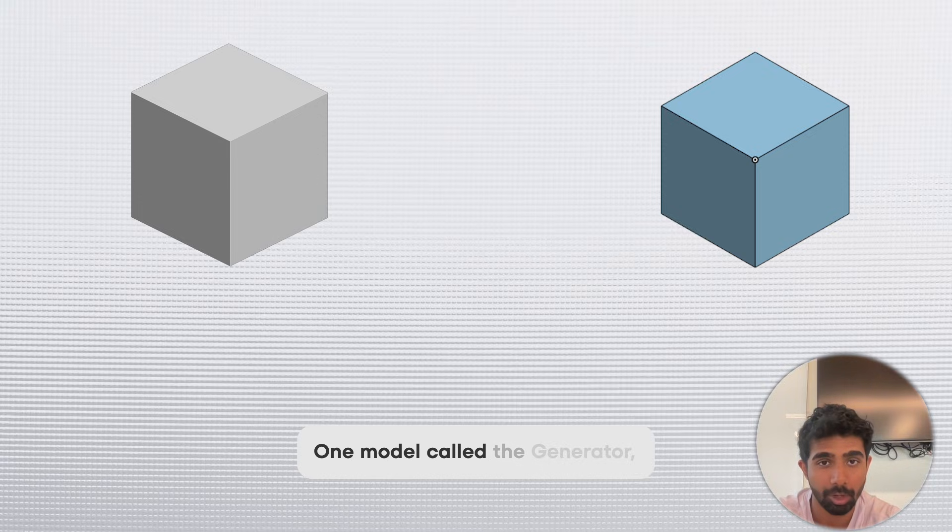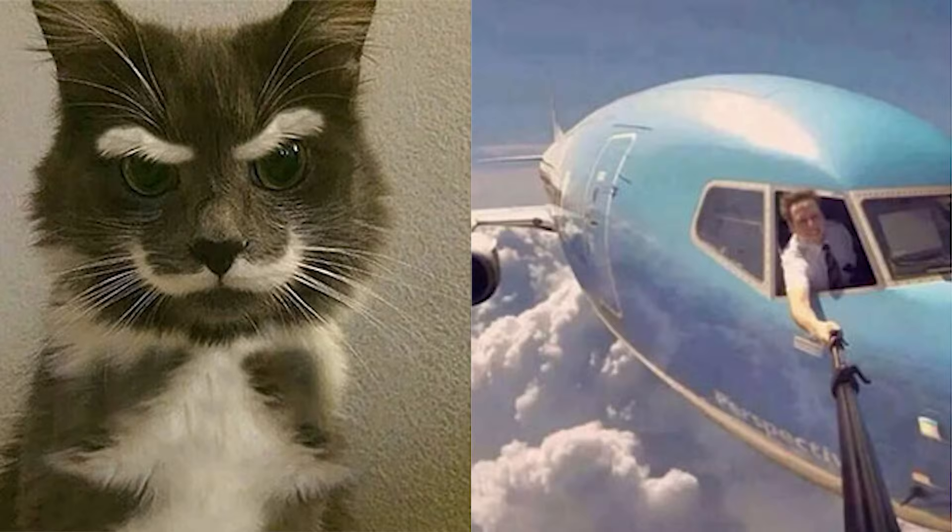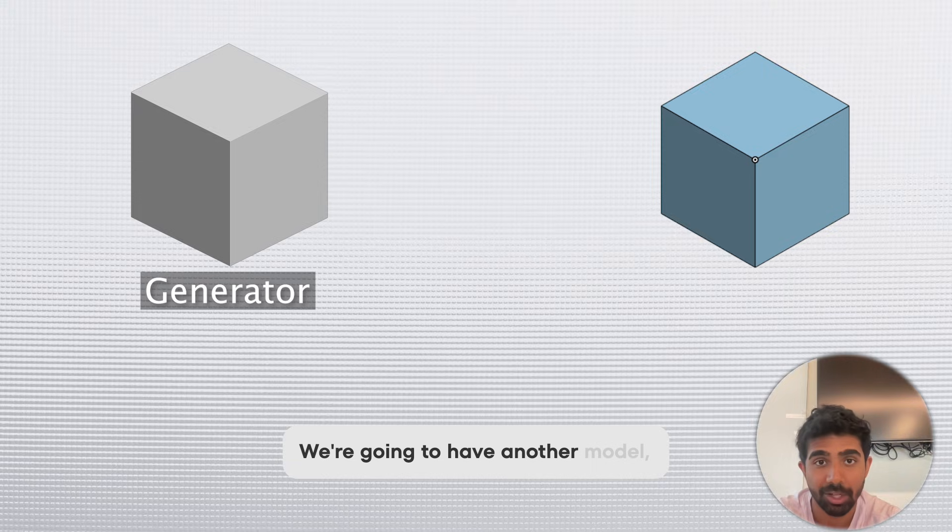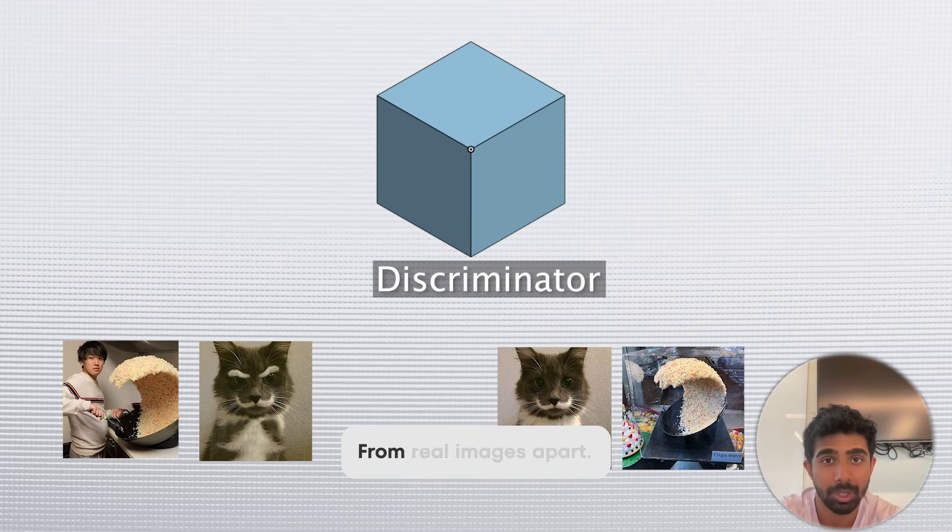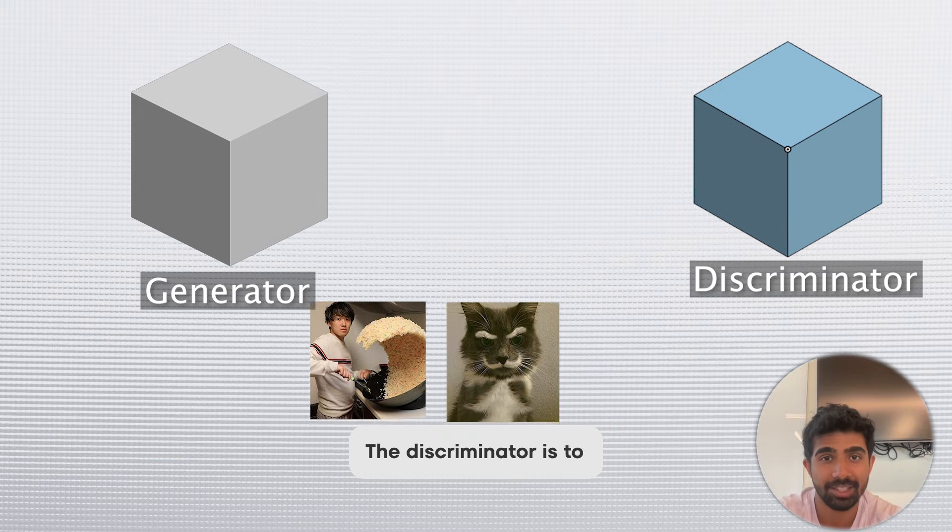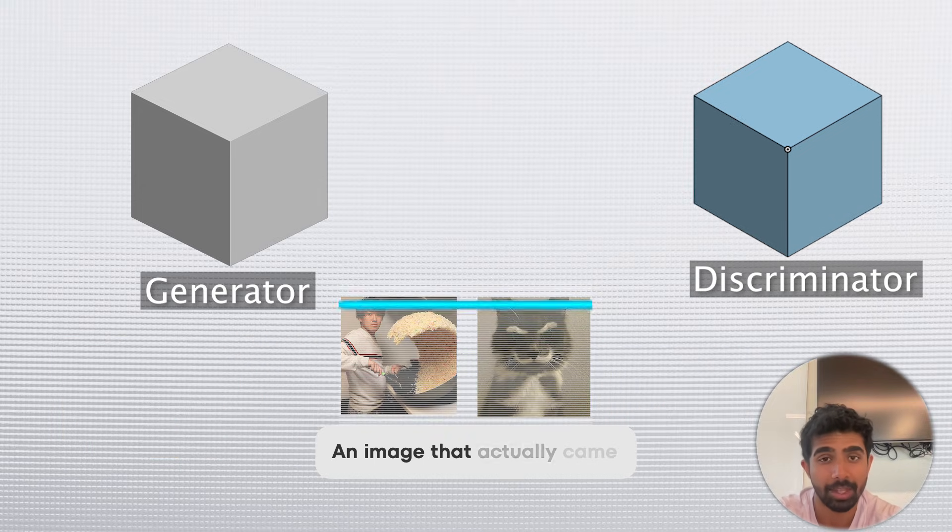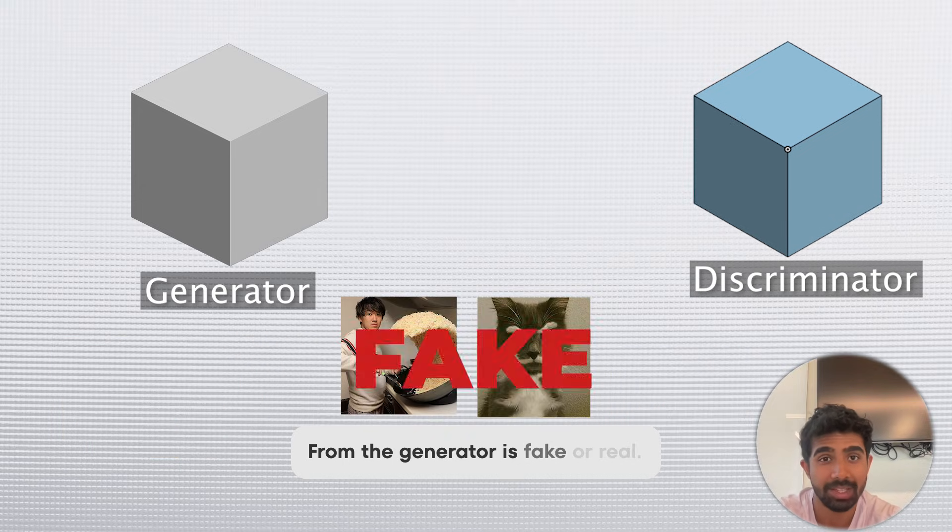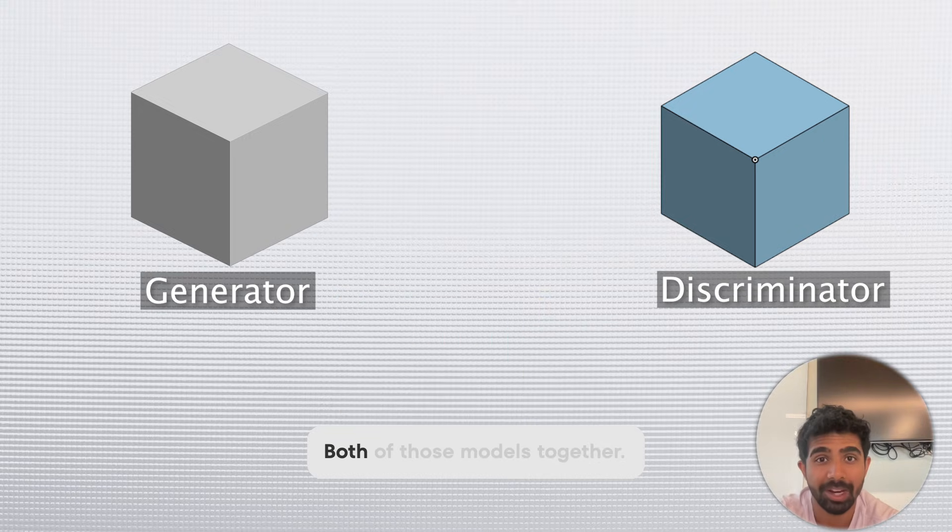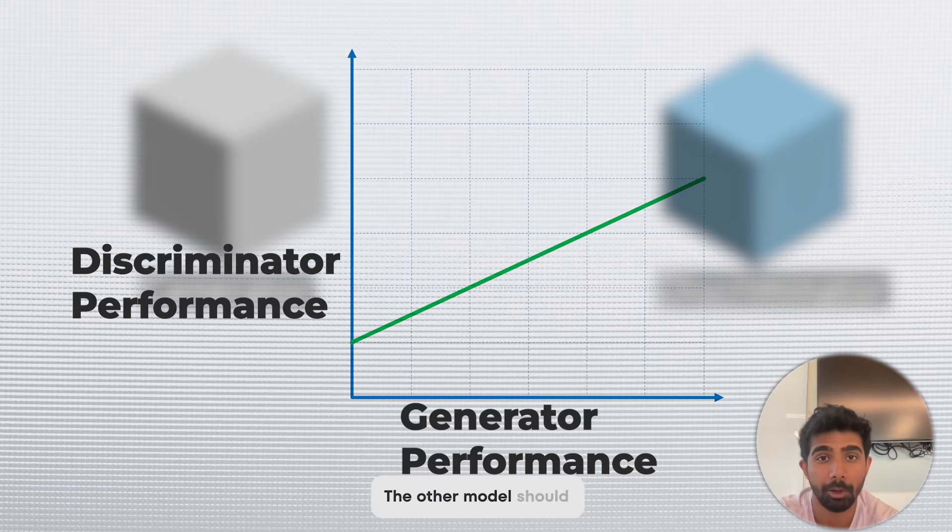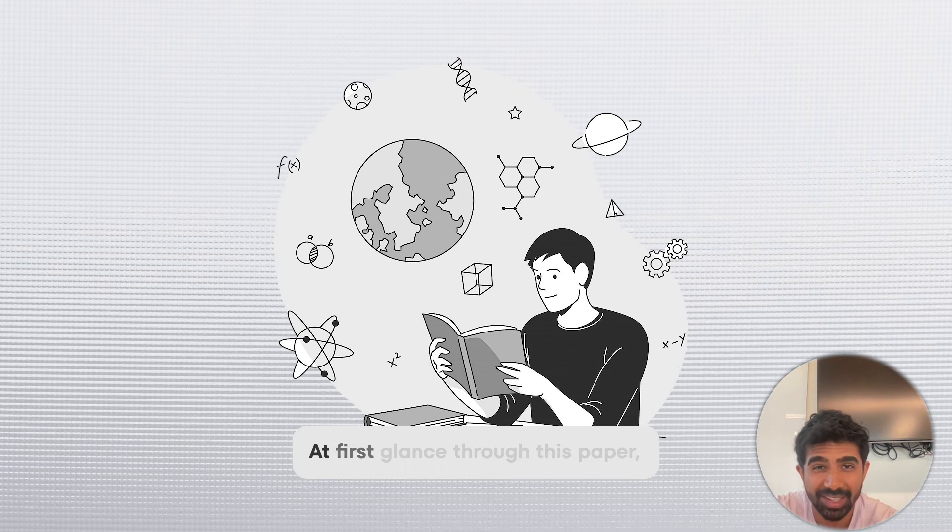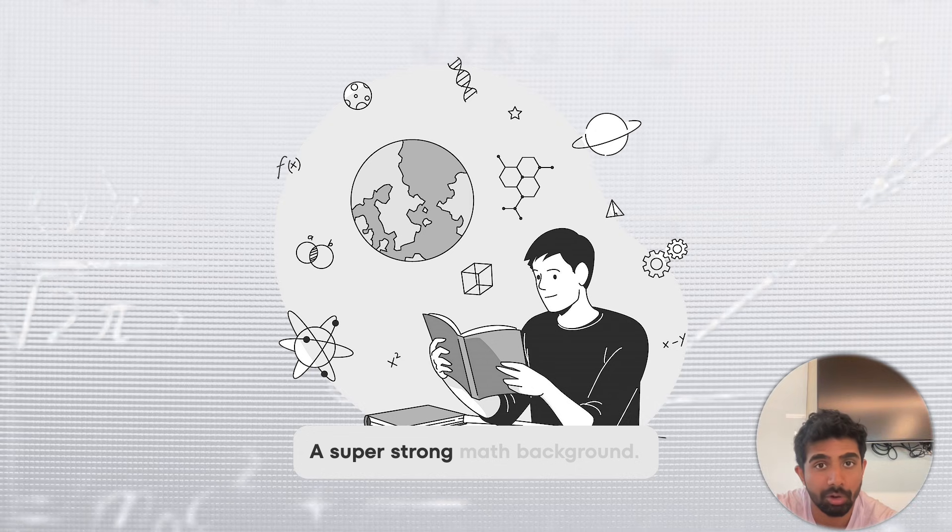So we're going to have one model called the generator, which is going to generate fake images. And we're going to have another model, the discriminator, whose job is to tell the fake images from real images apart. So the goal of the discriminator is to tell whether or not an image that actually came from the generator is fake or real. We're going to train both of those models together. As one model improves, the other model should theoretically improve as well. At first glance through this paper, it looks like you need a super strong math background.